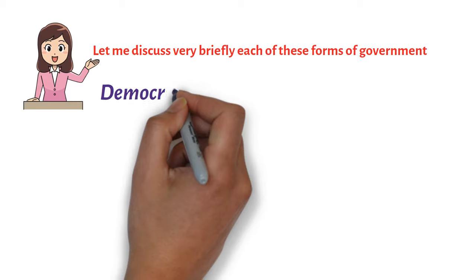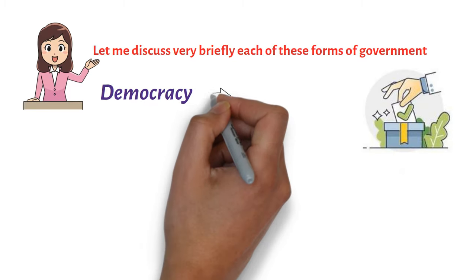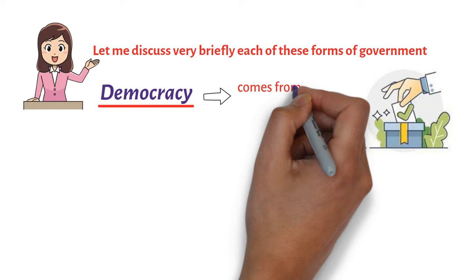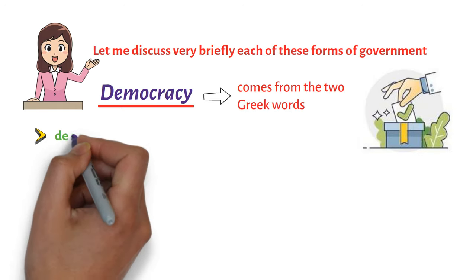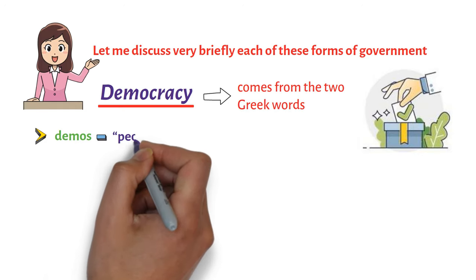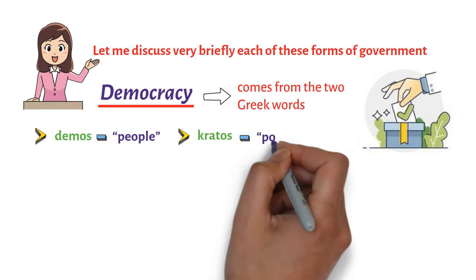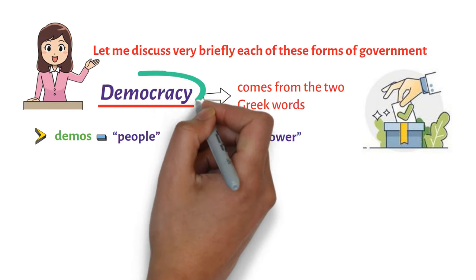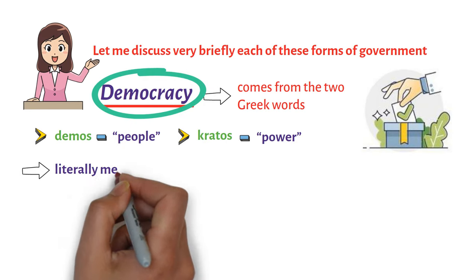On Democracy. The word democracy comes from the two Greek words, demos, which means people, and kratos, which means power. Democracy, therefore, literally means power of the people.